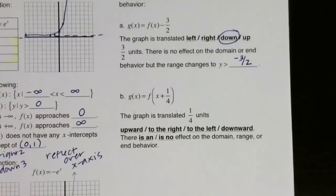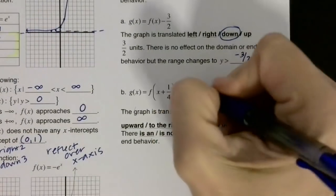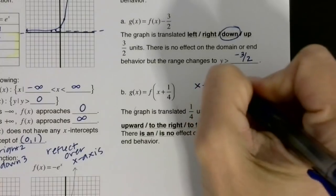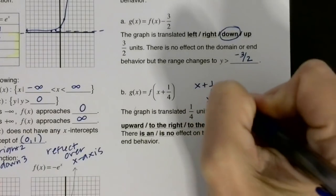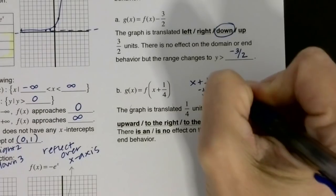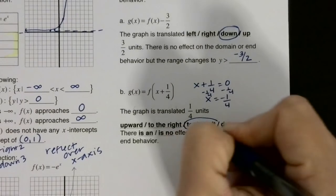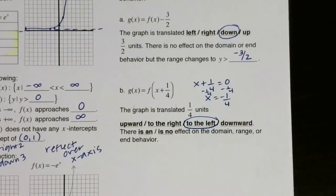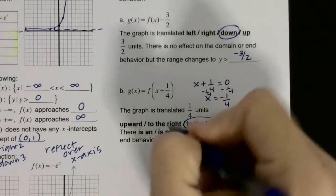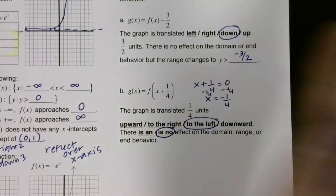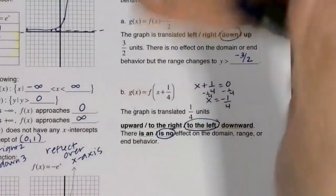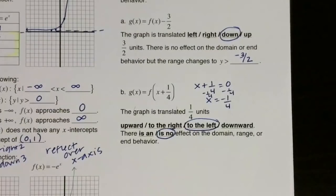Let's take a look at this one right here. x plus 1/4. So because that's in with the x, I'm going to set it equal to 0, and I get negative 1/4. So this is going to be translated left 1/4 of a unit. There is no effect on the domain, range, or end behavior because I just shifted the graph left or right. I didn't move it up or down, and I didn't reflect it. So that makes no changes to the range or anything else for that matter. And that's it for today's lesson.